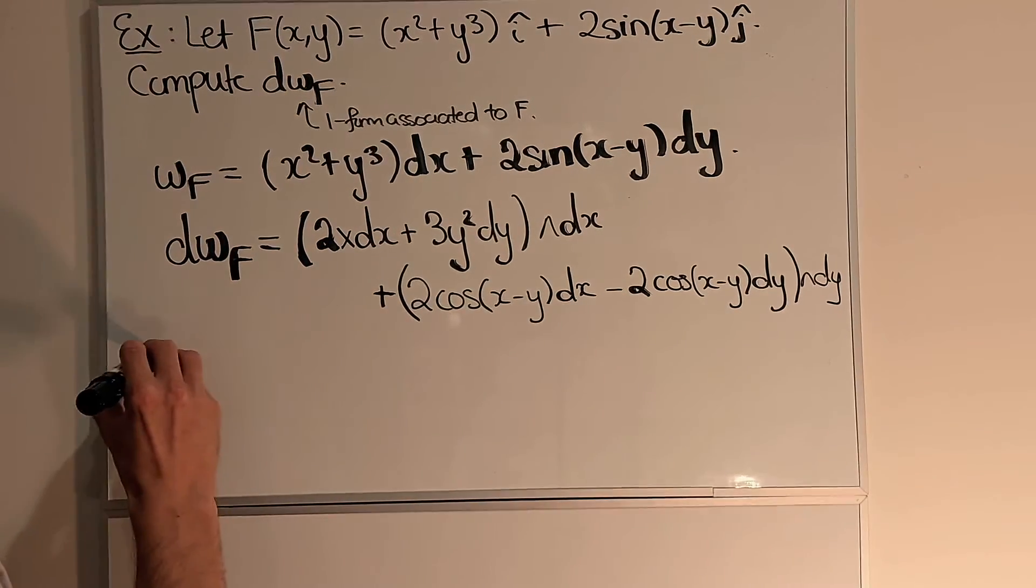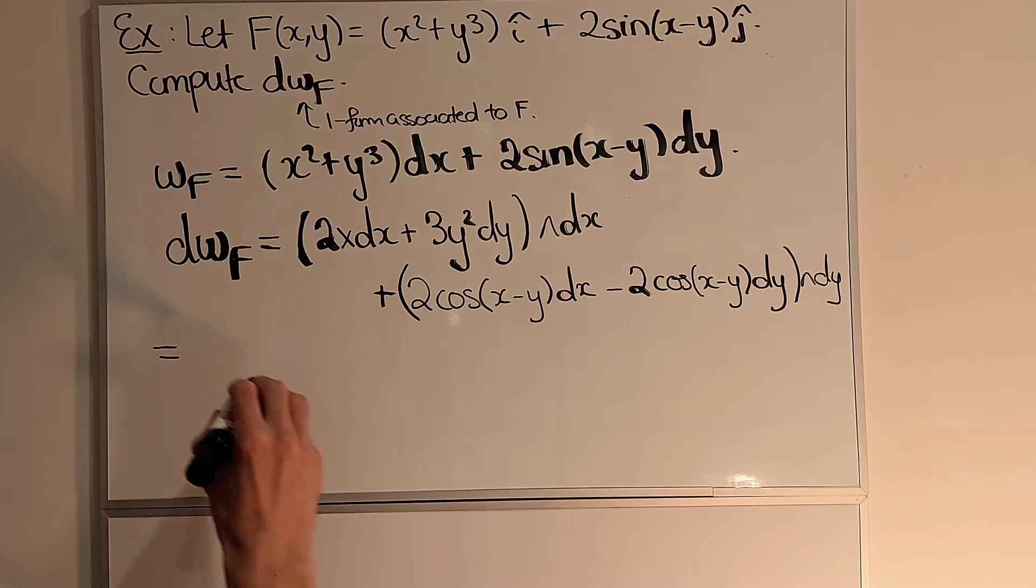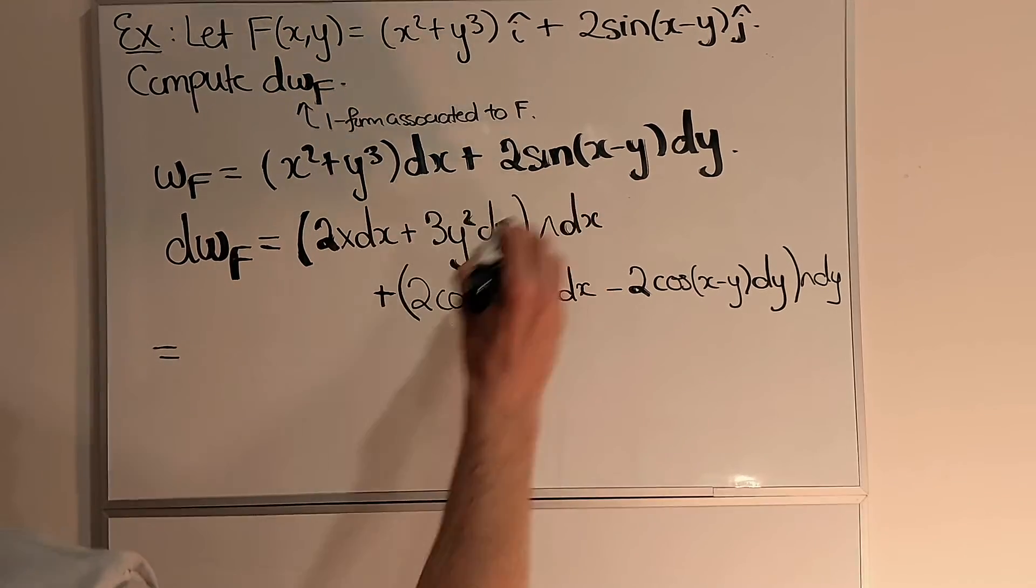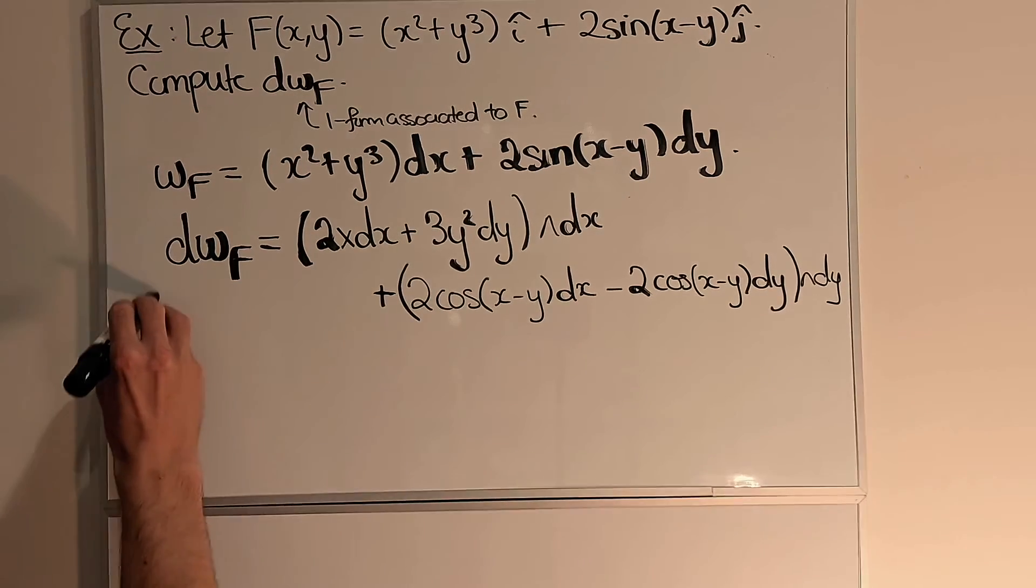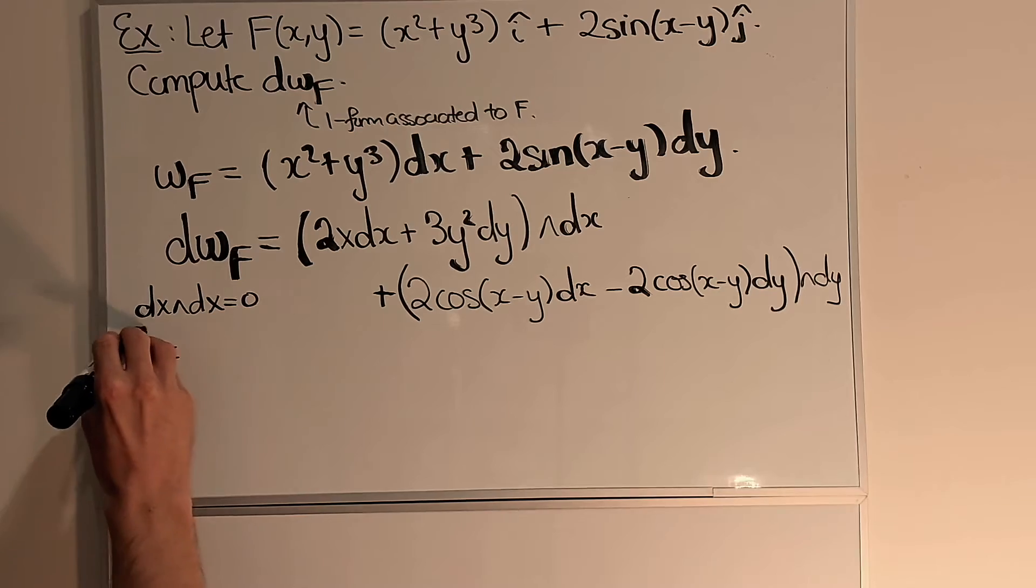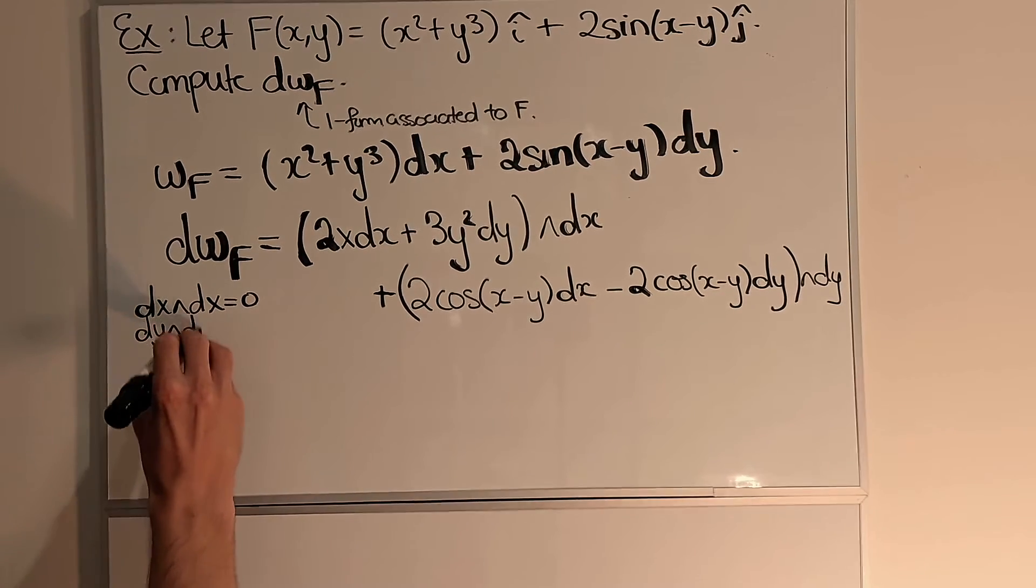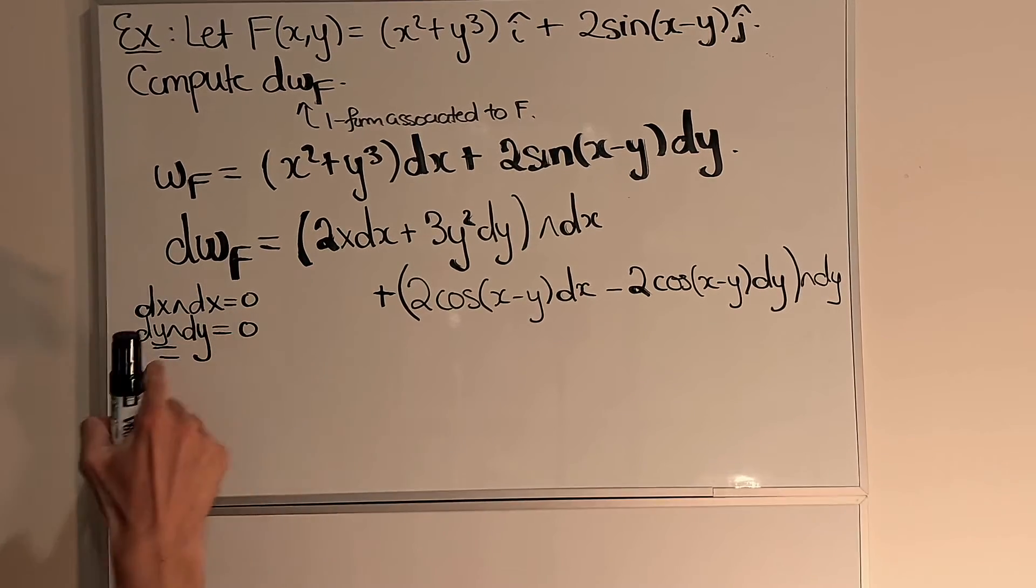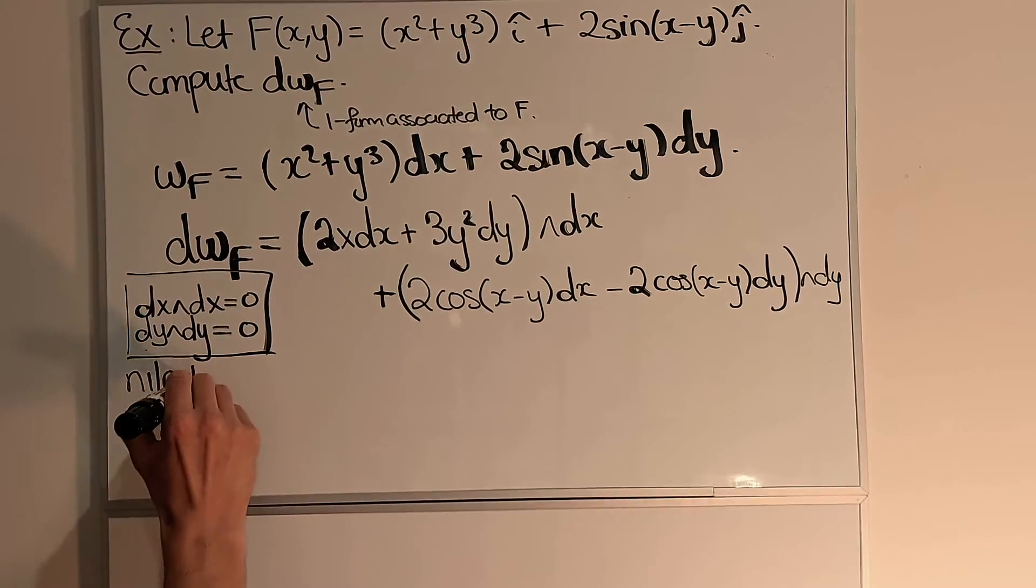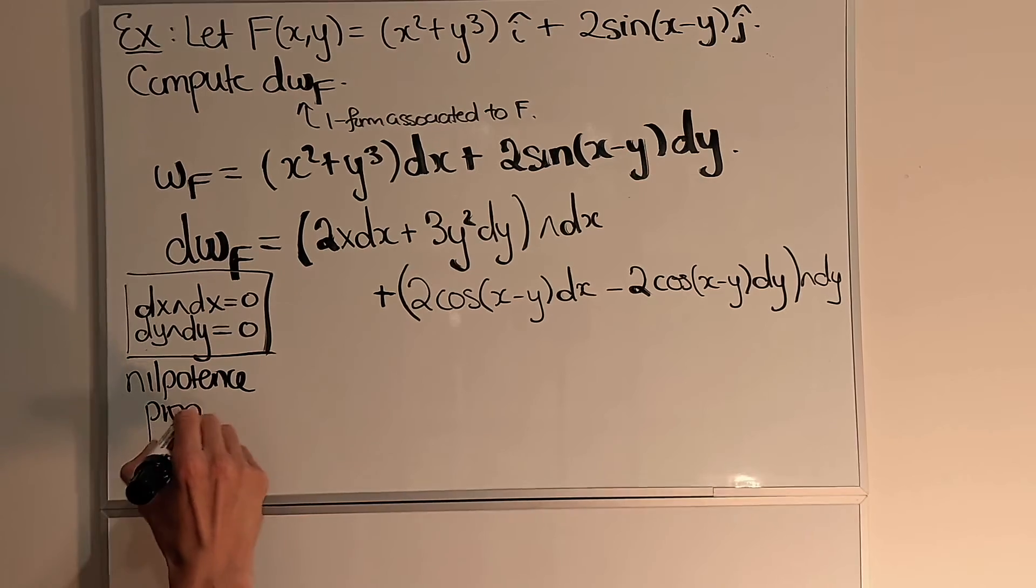Okay, so we now can expand this out, but what we observe is that because of the nilpotence property, namely dx∧dx = 0 and dy∧dy = 0. This was the nilpotence property of the wedge product.